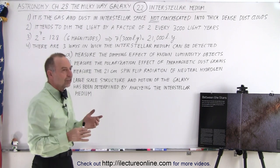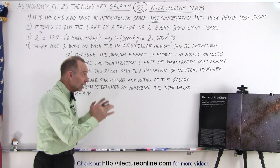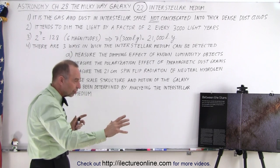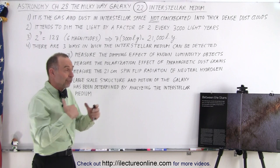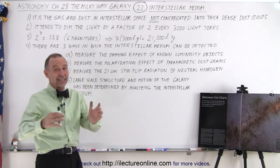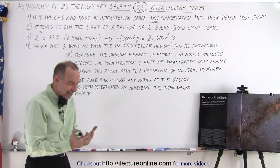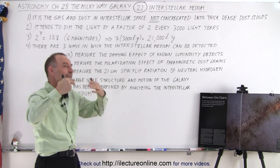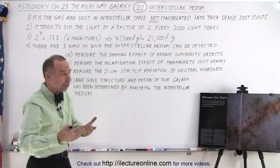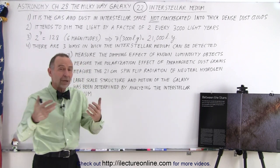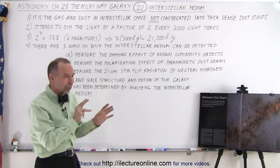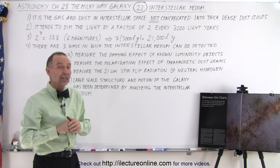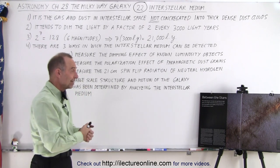The large-scale structure and motion of the galaxy can ultimately be measured by measuring the interstellar medium. By studying the interstellar medium, we can see the structure and motion of the galaxy beyond the dark dust lanes we can't see through. Using infrared telescopes and measuring radiation coming through dust clouds, we're able to figure out how things are moving, how they're changing, and how things are actually structured on the far edges and the other side of the galaxy that we normally can't see in visible light.